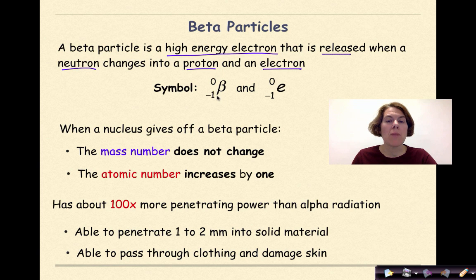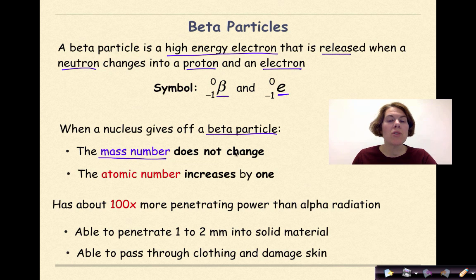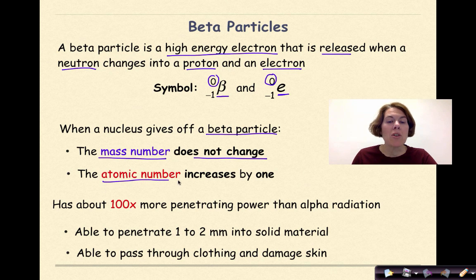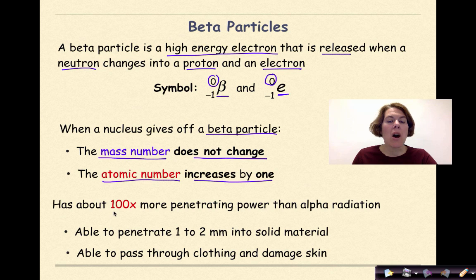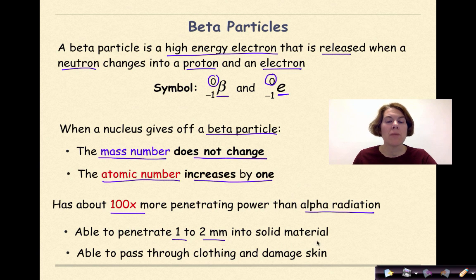A beta particle can be represented by the beta symbol or as an E for an electron. When a nucleus gives off a beta particle, the mass number does not change, but the atomic number increases by one. Beta radiation has about a hundred times more penetrating power than alpha radiation, able to penetrate one to two millimeters into solid material and pass through clothing and damage skin.